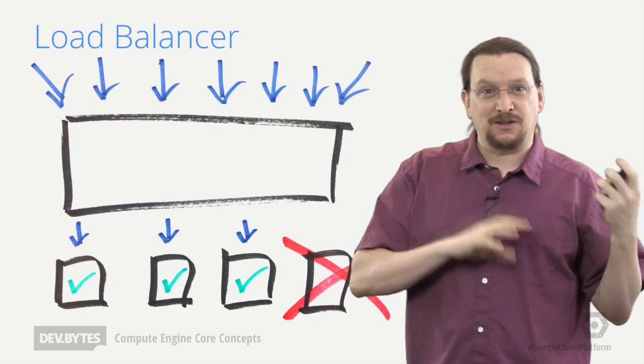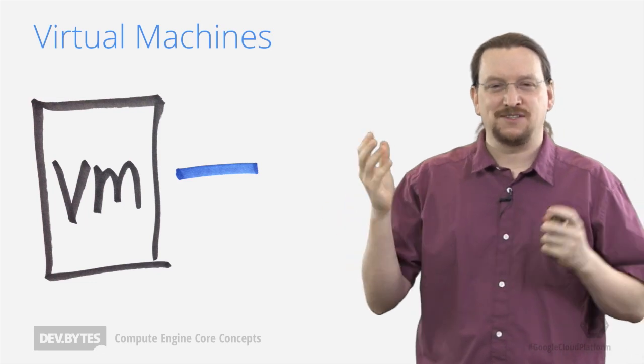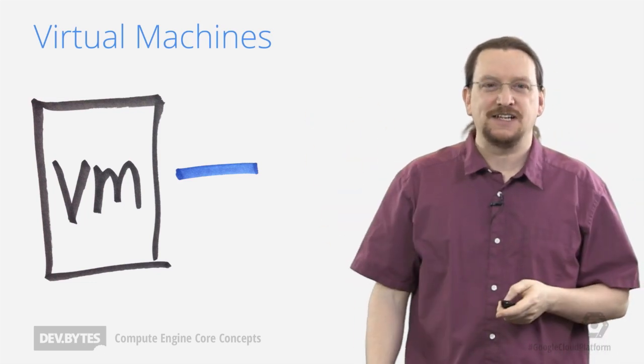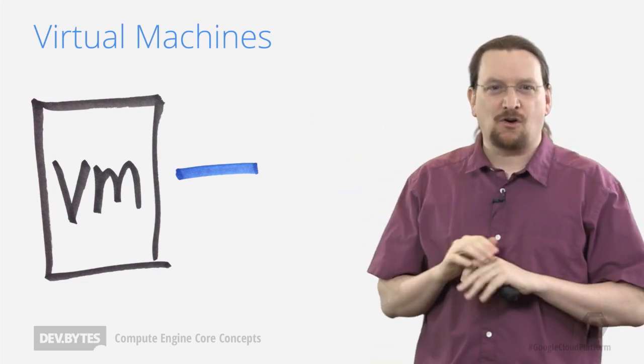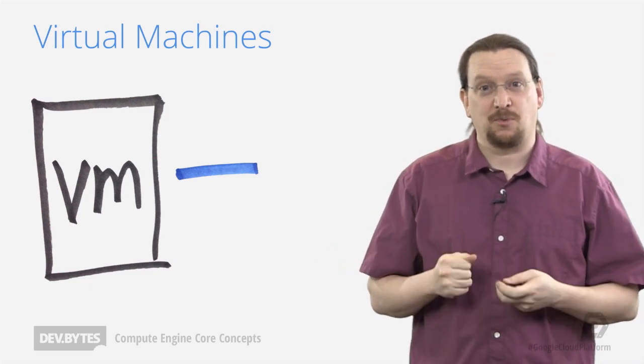So we've got networks, we've got load balancer traffic on those networks, and next up we have virtual machines. And virtual machines are literally the core of Compute Engine. When creating a virtual machine, you choose what balance of CPU to RAM is right for your needs. And these virtual machines are all running on Google's infrastructure, in the same data centers we use for our products.